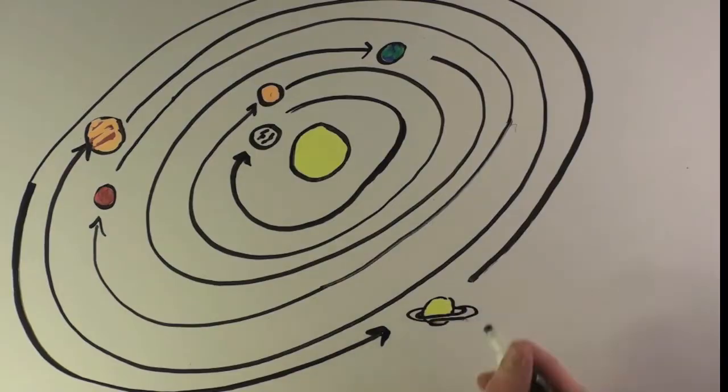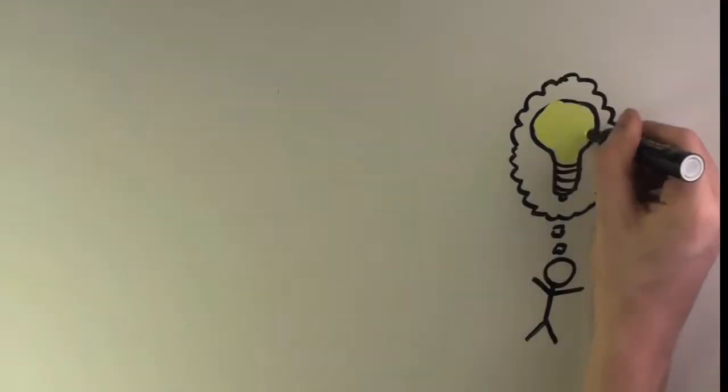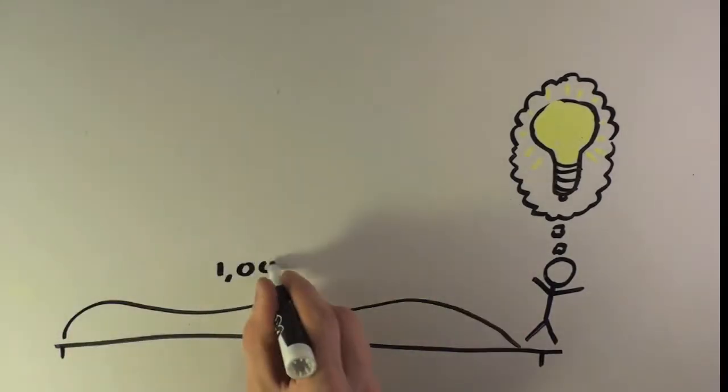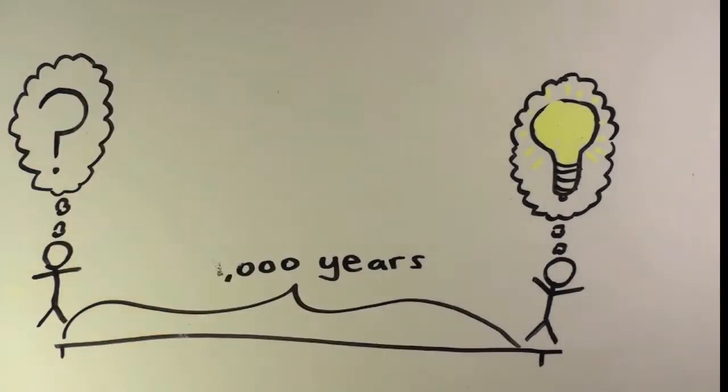While the fact that the Sun is the center of our solar system is common knowledge today, it took 1,000 years of observation and theory for the correct model to be found.